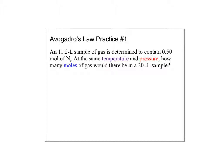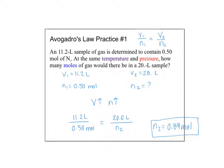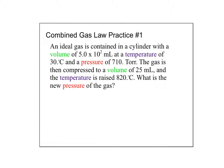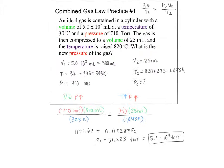For Avogadro's Law, as volume increases the number of moles increases. Solving for n₂ gives 0.89 moles, which is bigger than the starting 0.5 moles — consistent with the direct relationship prediction.